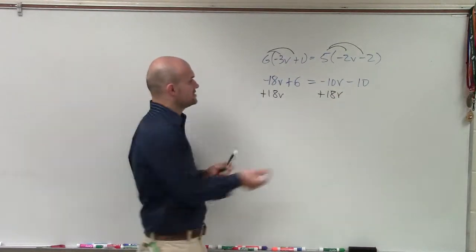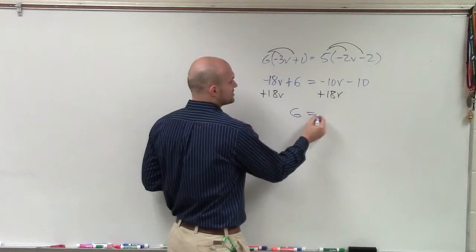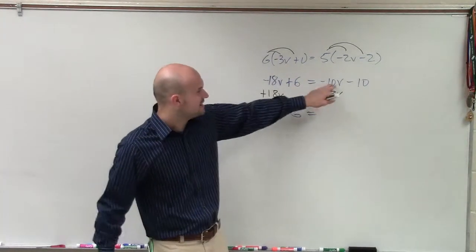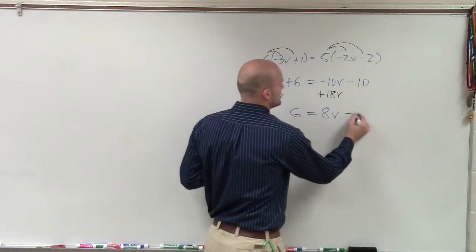So therefore, now my equation: negative 18 plus 18B is going to be 0B, which is 0. 0 plus 6 is just equal to 6. So I have 6 equals negative 10B plus 18B, which is 8B minus 10.